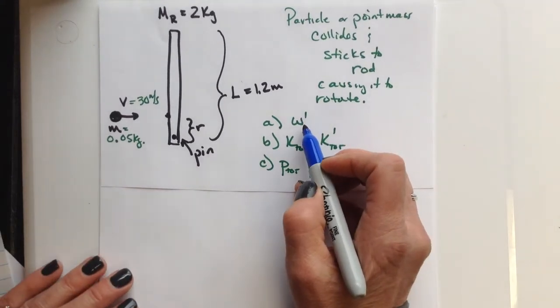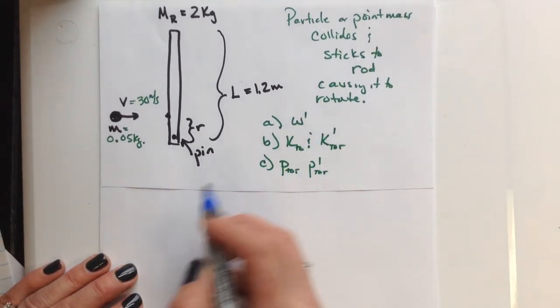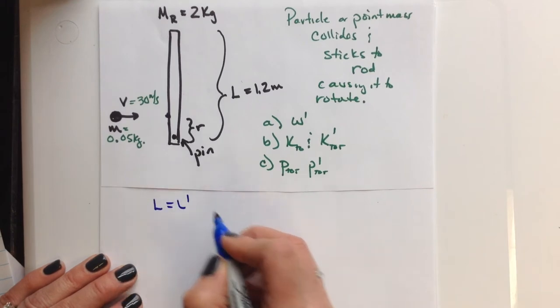So if I want to find a final angular speed, I'm going to use the idea of conservation of angular momentum.